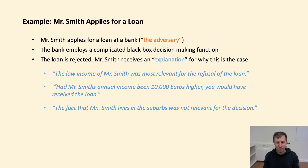Let us now illustrate the role of algorithmic explanations in an adversarial decision-making context, using again the example of a loan application. Suppose that the loan application is rejected on the basis of a machine learning algorithm developed by the bank. In addition to the rejection, the bank also provides an explanation using one of a large class of post-hoc explanation algorithms recently proposed in the literature. These algorithms look at the decision function employed by the bank and try to come up with an explanation for why a particular decision was made. Importantly, these algorithms work in a post-hoc manner, meaning they are not integrated into the decision-making process itself, but try to explain the decision after the fact.